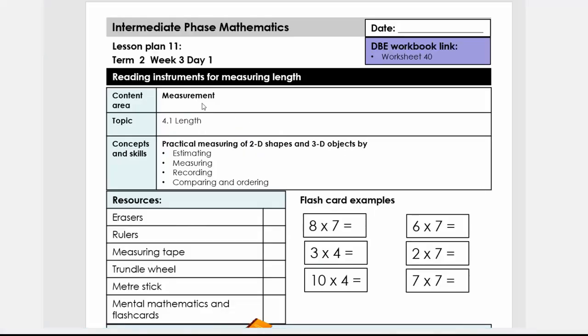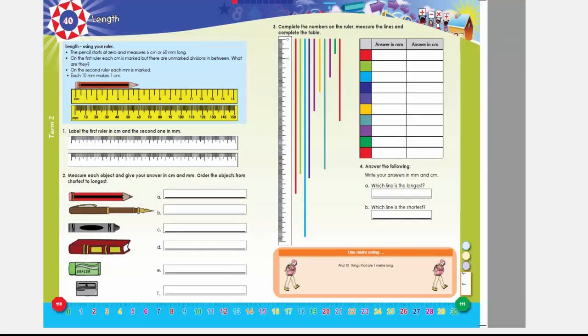Good day everybody, today we're going to do lesson plan 11, grade 4 term 2. The topic is reading instruments for measuring length. I link to the DBE book worksheet 40. I'm quickly going to show you.